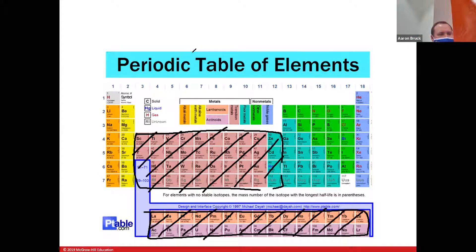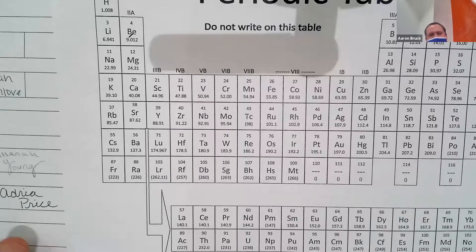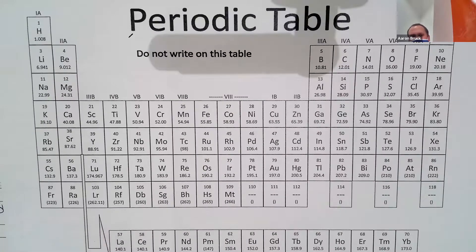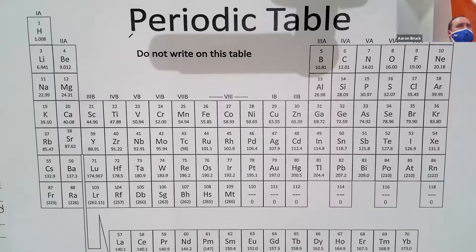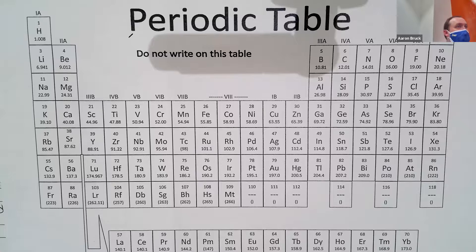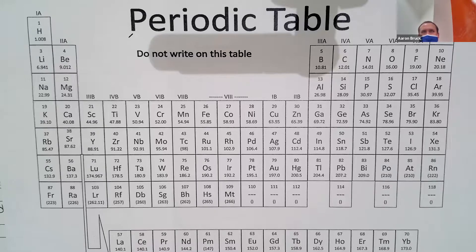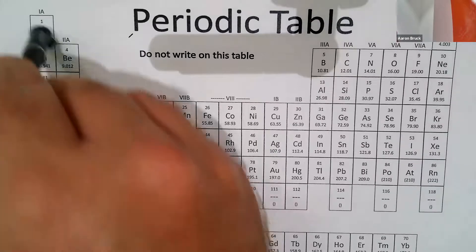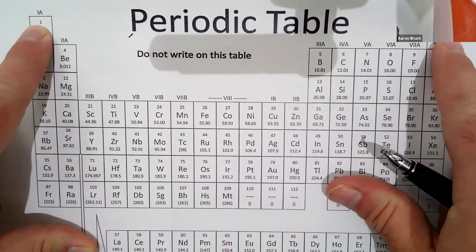On a periodic table using the CAS — Chemical Abstract Service — numbering system, which is North American based, you'll see groups split into main group elements with A designations and transition metals with B designations. This is different from the IUPAC system, which uses 1 through 18 across the top.